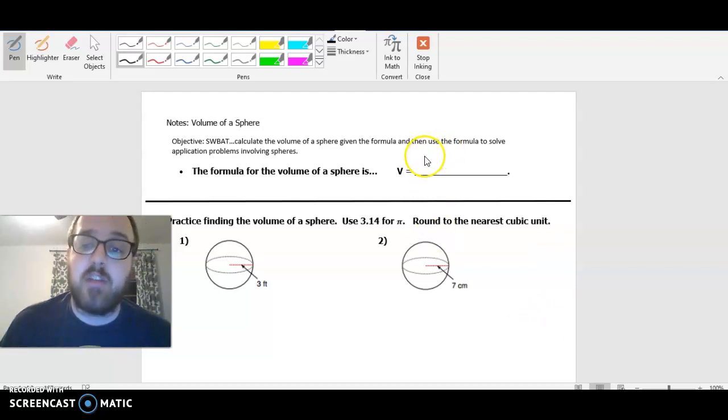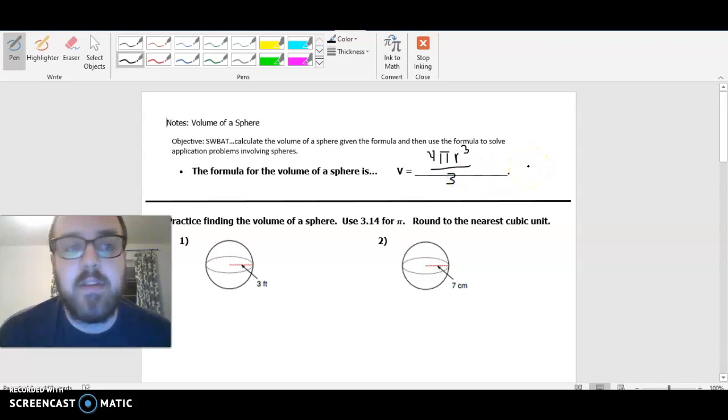The volume of a sphere is actually going to be this formula right here. It's going to be 4πr³ divided by 3. So basically all we have to do is find the radius and then we're going to go ahead and plug it in this formula and solve our problem.